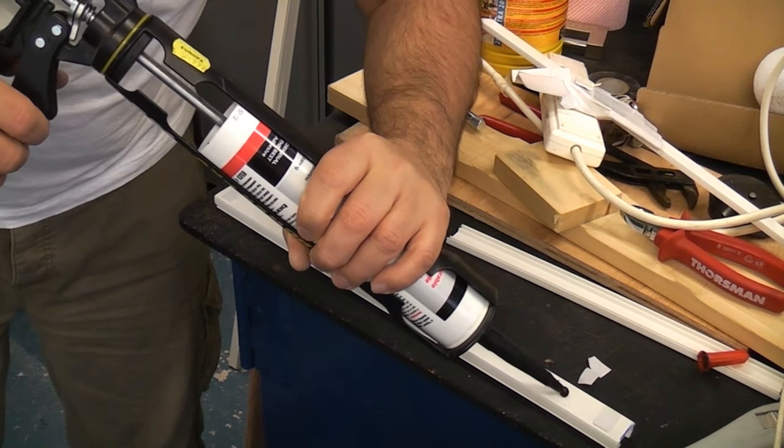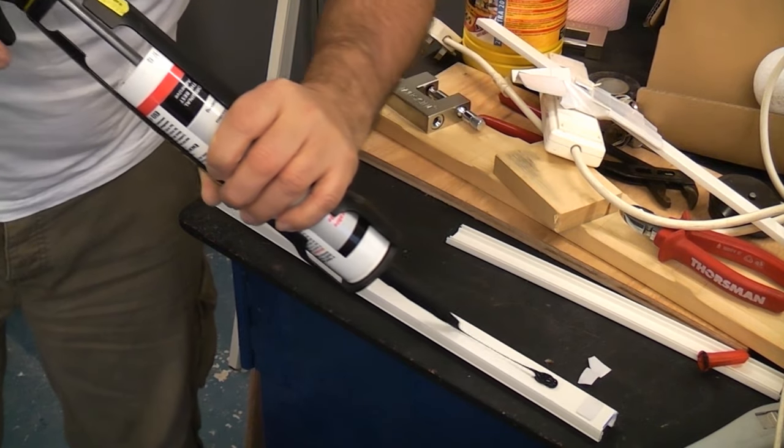We're then going to get some silicone sealant, so we're going to put a few blobs on the back of the trunking.